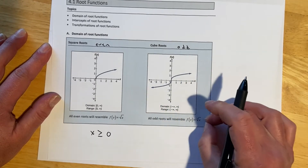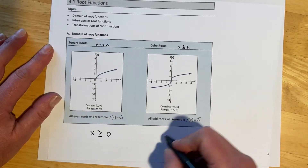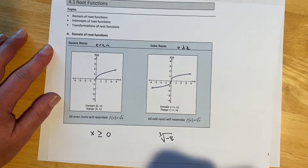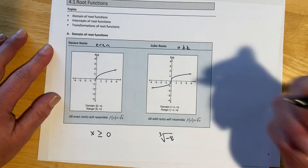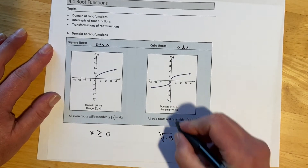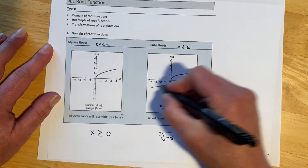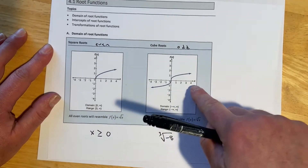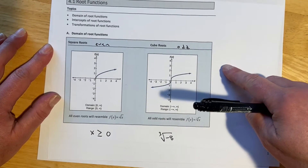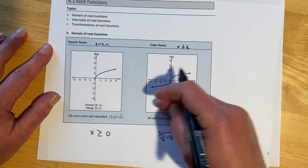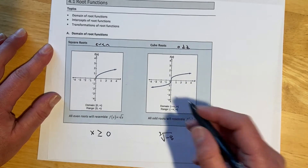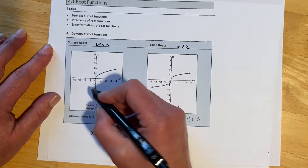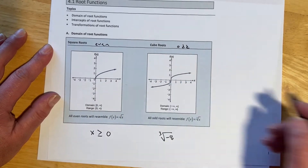That is different from our odd roots. With an odd root, it's okay — for example, the cube root of negative 8 is negative 2, because negative 2 times negative 2 times negative 2 makes negative 8. So we can have negative values. Likewise, the cube root of 8 makes positive 2. So for odd roots our domain is going to be all real numbers, and for even roots it's going to be some sort of limitation dependent upon the shift.